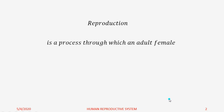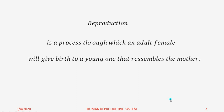What is Reproduction? Reproduction is a process through which an adult female will give birth to a young one that resembles the mother.